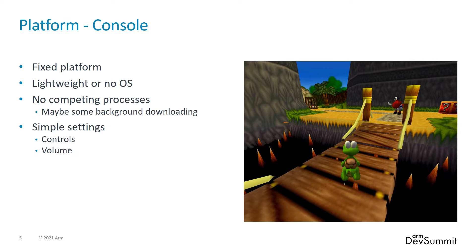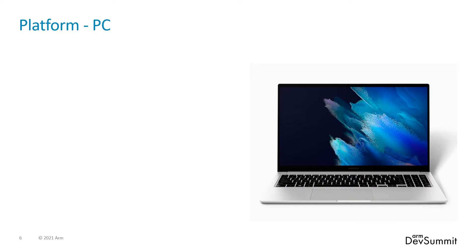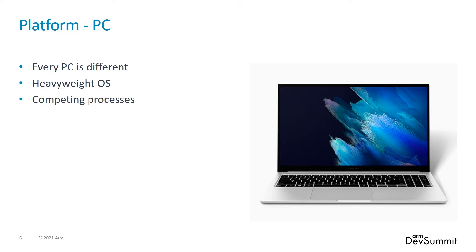On console, you can optimise directly for the hardware and get good stability. PC is a harder proposition. Pretty much every PC is different because you can mix and match the hardware. You also have a heavyweight OS handling all of the resources, and any hardware will be hidden behind APIs. There can also be other applications running in the background — the user can compress a movie while playing your game. Once the correct options have been selected though, you can get a stable frame rate.